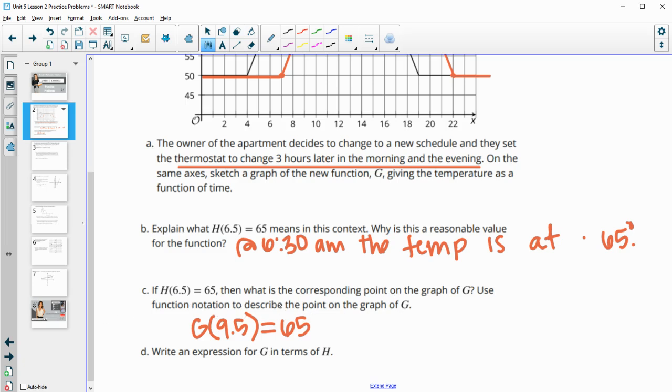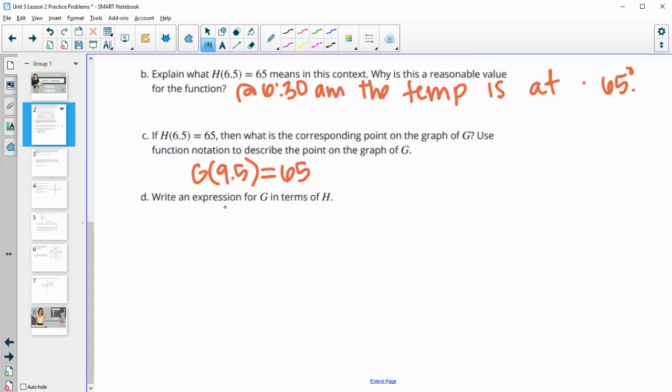And then it says use the function notation to describe this. So that's the function notation. Now we want to express G in terms of H. So remember that G of 9.5 is equal to 6.5, is equal to H of 6.5. So these are corresponding values.